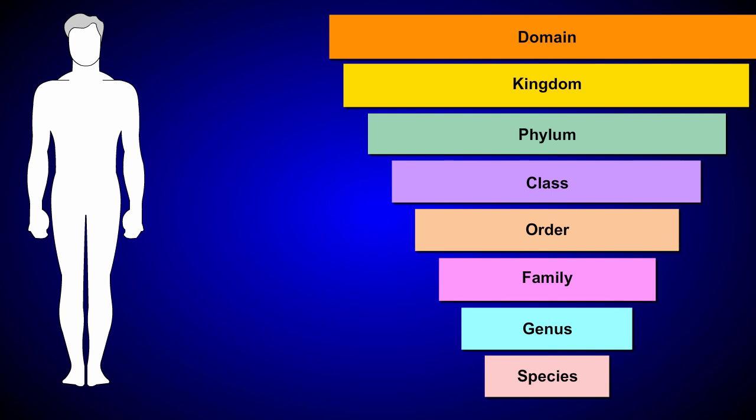Let's start at the top with domain. There are three domains, and all living organisms fall into one of these. Humans are in domain Eukarya.